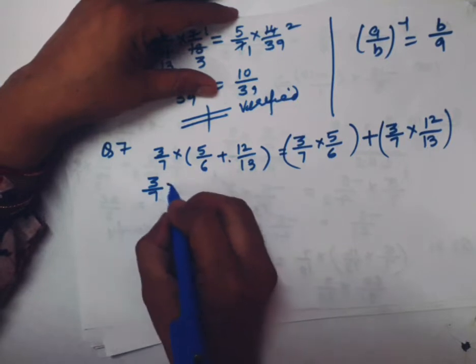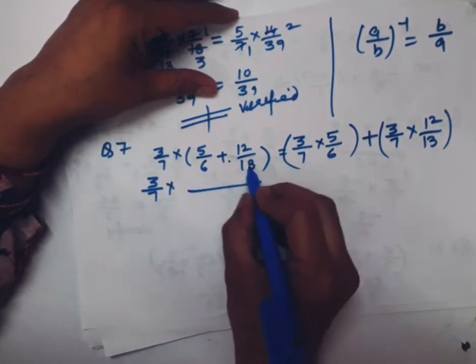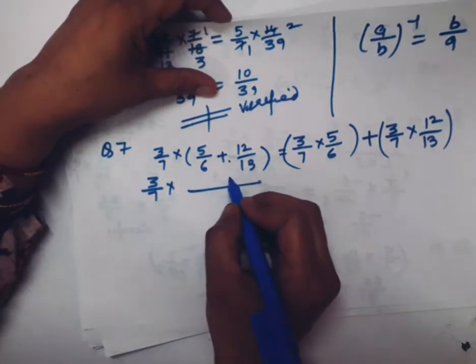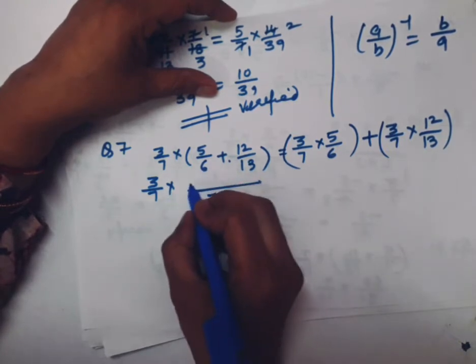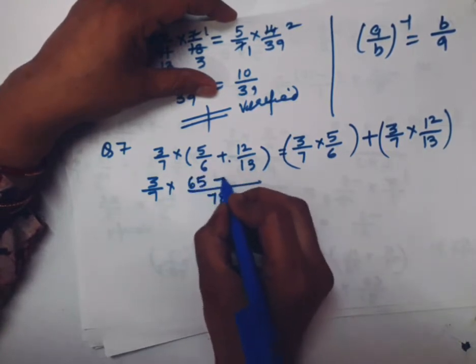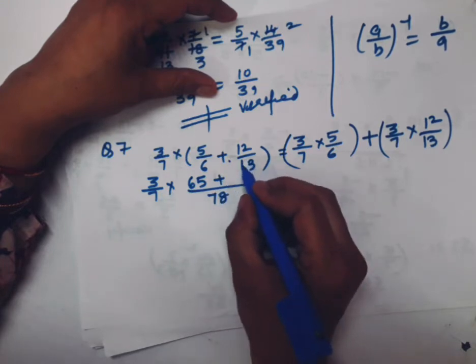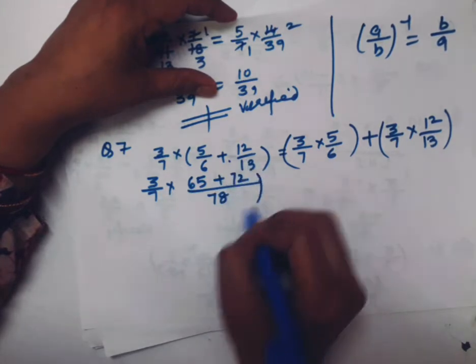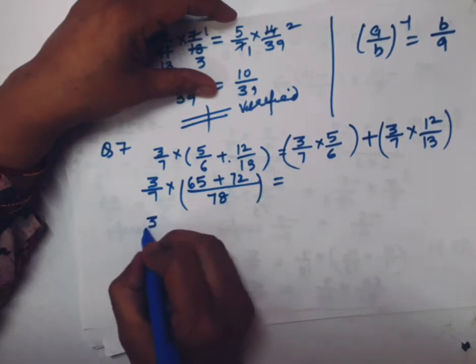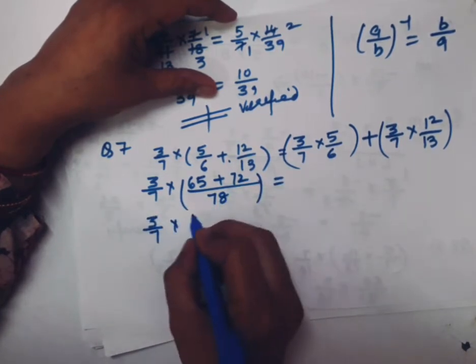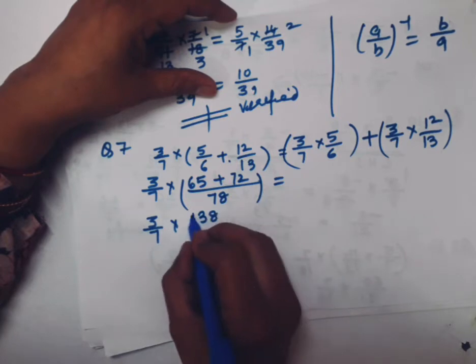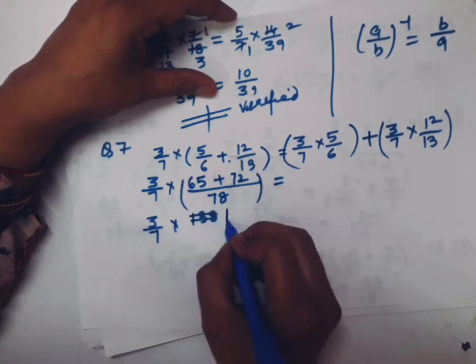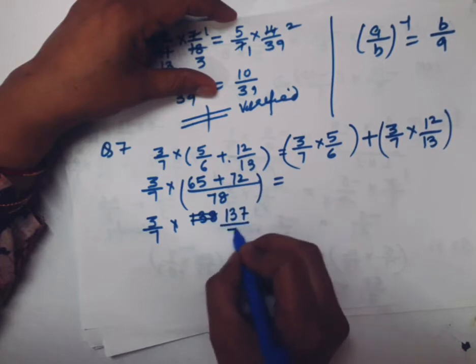I have to verify. I will solve this on one side and this on one side. First let's solve this. 3/7 × LCM of 13 and 6. 13 sixes is how much? 78. 78 sixes is 13. 13 fives are 65 plus 13 sixes, 12 sixes are 72. Now first solve this. 3/7 × 137/78. Can 7 and 78 be cancelled? No. 7 eights are 56. We have to multiply. 3 sixes, can any number be cancelled? Yes this is cancelled, 3 by 3.